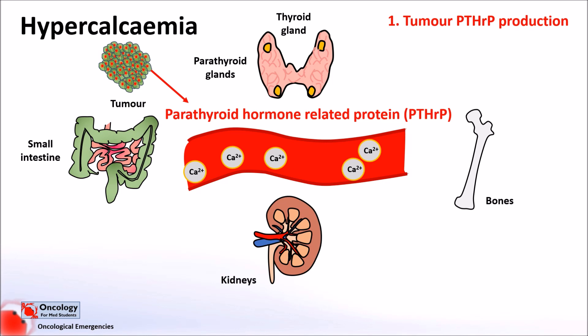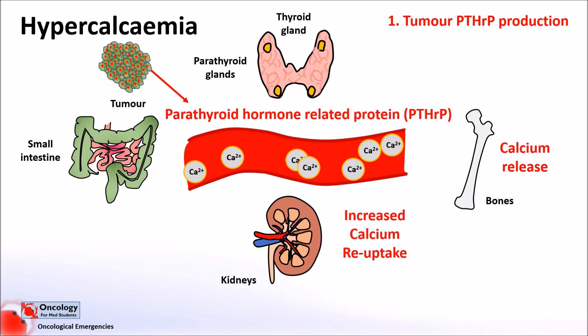Parathyroid hormone-related protein is actually a normal protein expressed in many tissues, including the breast, where it facilitates calcium transfer into breast milk amongst other functions. It shares some structural similarity to parathyroid hormone. Its most profound actions in calcium metabolism are the release of calcium from bone and reabsorption of calcium in the kidneys. Unlike parathyroid hormone, it does not tend to lead to the production of calcitriol — activated vitamin D — so you don't get a significant increase in gut absorption. Blood tests typically show high parathyroid hormone-related protein levels, low parathyroid hormone levels, and normal to low calcitriol levels.